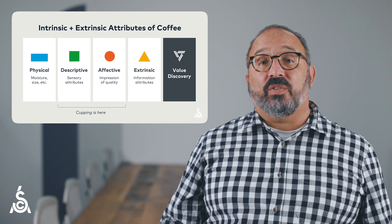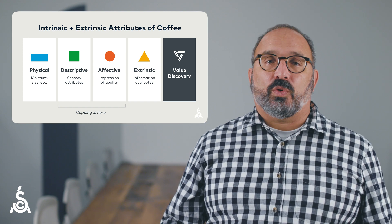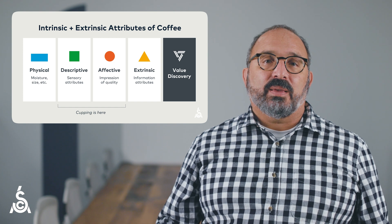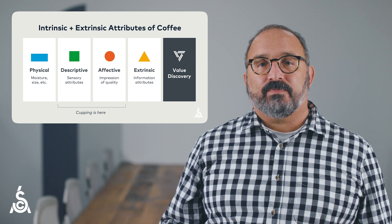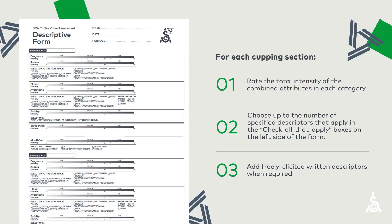We then began to review each of the four individual assessment types that make up the holistic CVA. First, the descriptive assessment, where you'll record information about a coffee's sensory attributes using basic olfactory references tied to the World Coffee Research Sensory Lexicon. You'll use this assessment to record the intensity of each category, check all that apply descriptors, and write freely elicited descriptors.